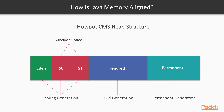Once an object is in survivor 0, it waits for the next garbage collection process. When that next GC runs, if there is still a reference to the object, it will be moved to survivor space 1. That process repeats multiple times, alternating between survivor 0 and survivor 1.